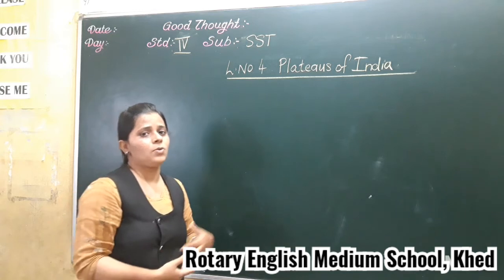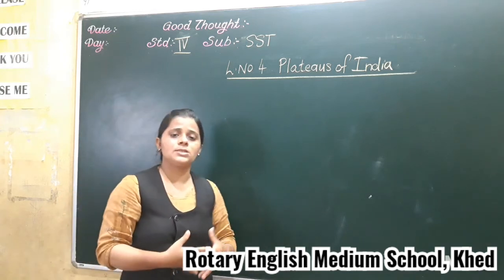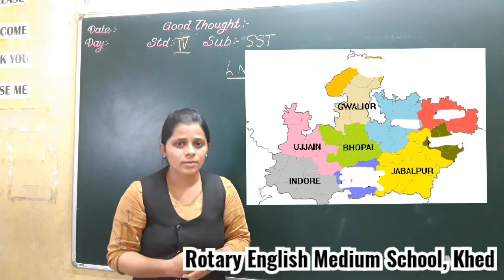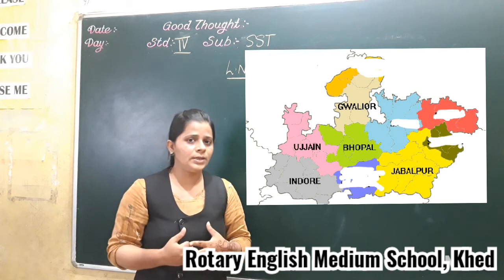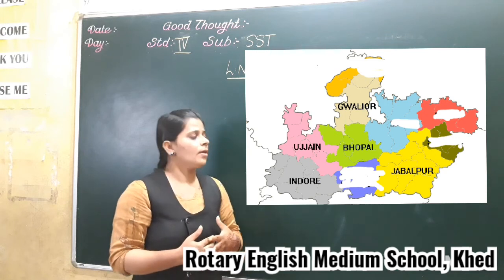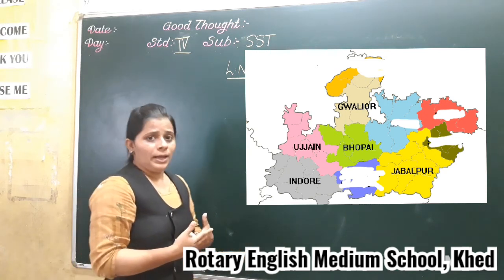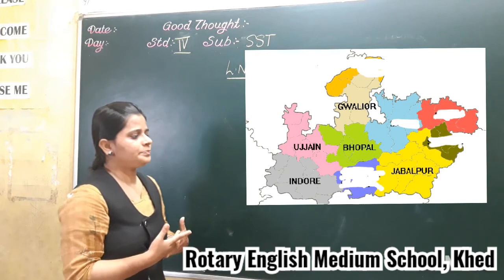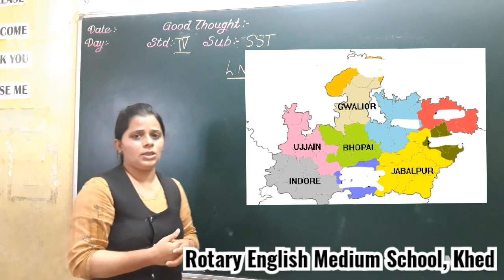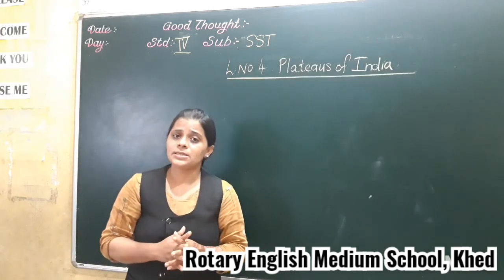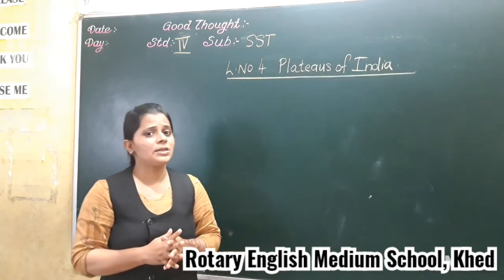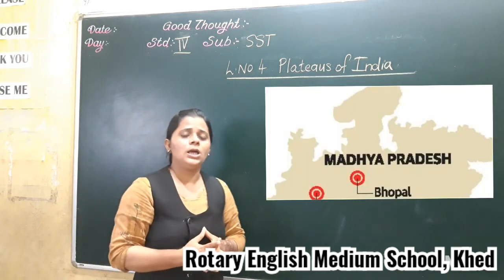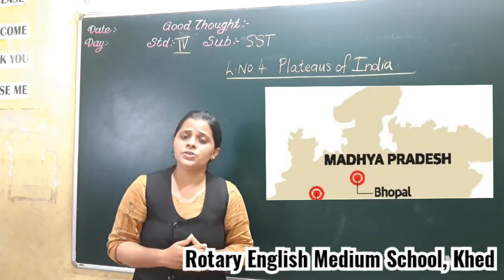Then we discussed about the food and their dress. And last we saw about the cities which come in Madhya Pradesh — that is Gwalior, Bhopal, Jabalpur and Indore. And the capital city of Madhya Pradesh is Bhopal.